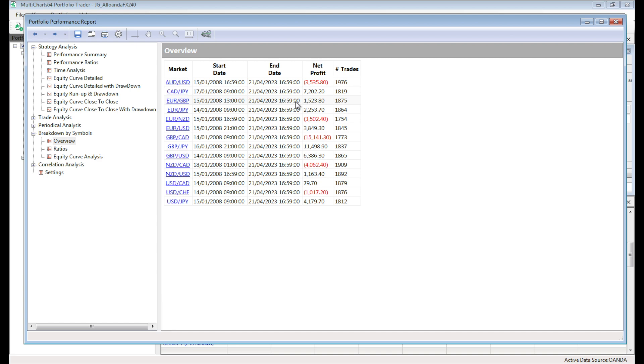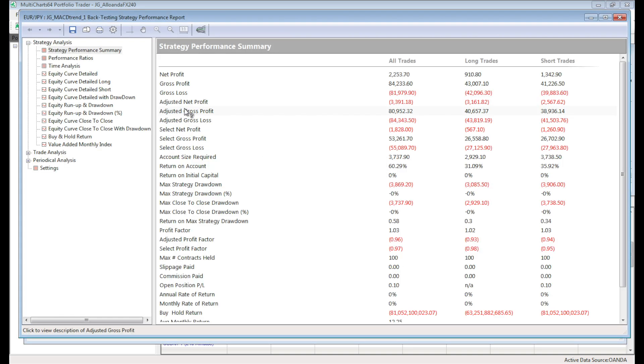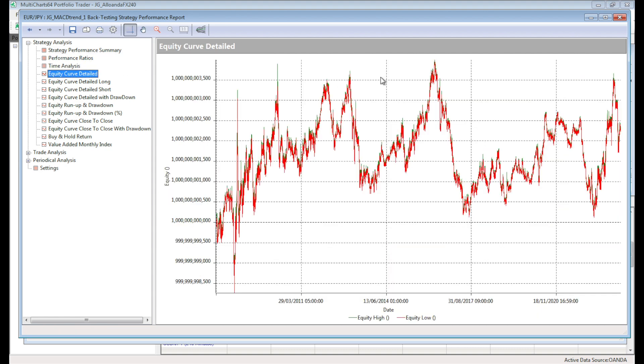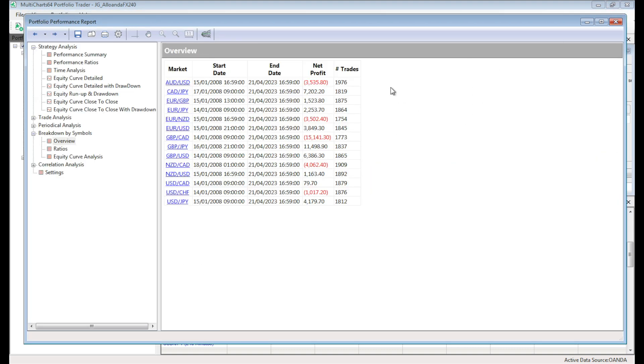Euro pound didn't make a lot of money. Euro yen positive, didn't make too much money. Equity curve's pretty awful. Euro New Zealand lost quite a lot of money. Euro dollar 3,800 pips but had a bad equity curve.